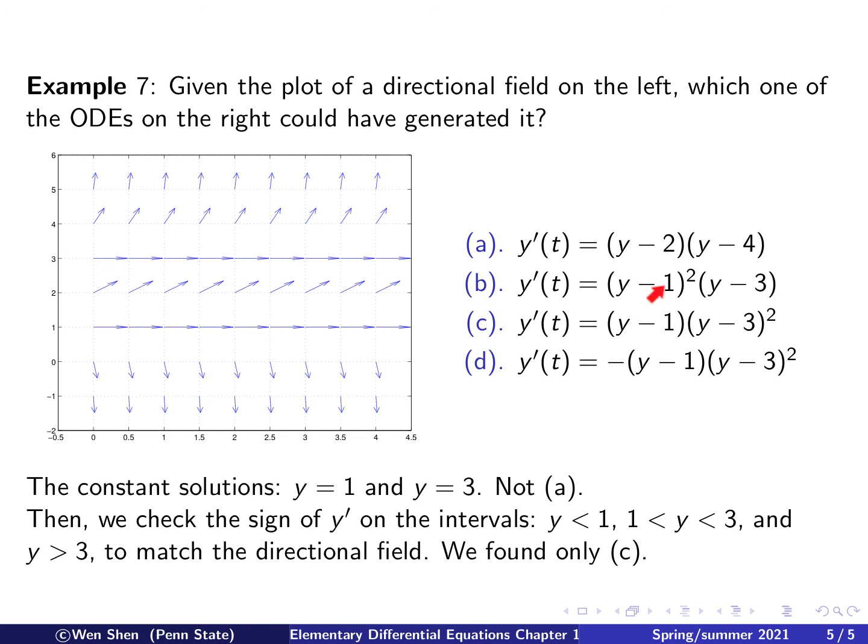And then we see that (b) cannot be. Okay? But both (c) and (d), they are good. This is power 1, this is power 2, and it only differs by a sign. So to pick between (c) and (d), and then you can just pick, say, y less than 1, it has to be negative. This is correct, and this is wrong. So you pick (c) also.